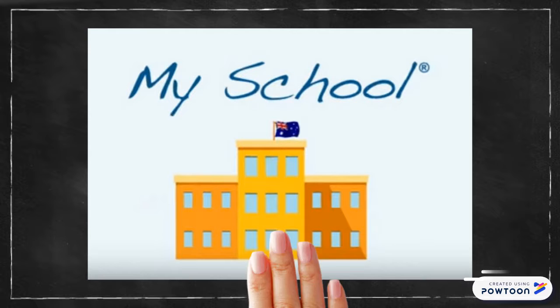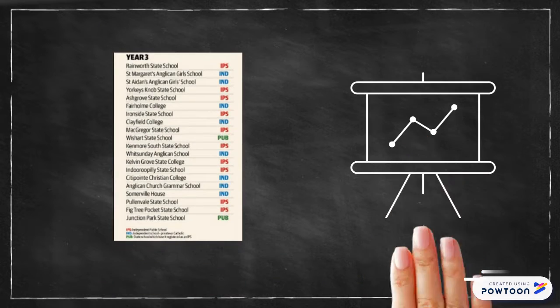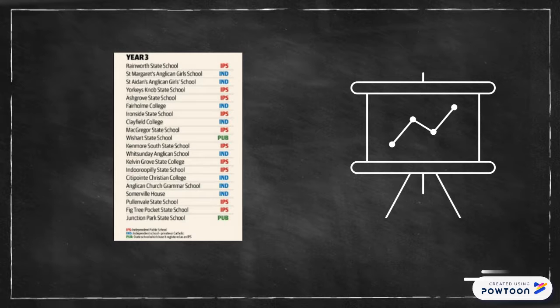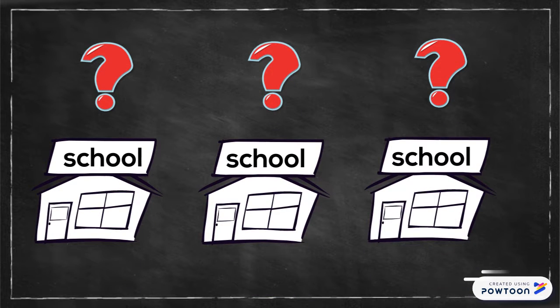The results are published to the My School website, enabling the public to view the results of each student and school and where they measured against other students and schools. Some parents use this information to determine which school their child will attend. However, the data has been deemed inaccurate by not considering the size, socio-economic backgrounds or culture of the school, providing parents with false beliefs of which schools are better for their child.